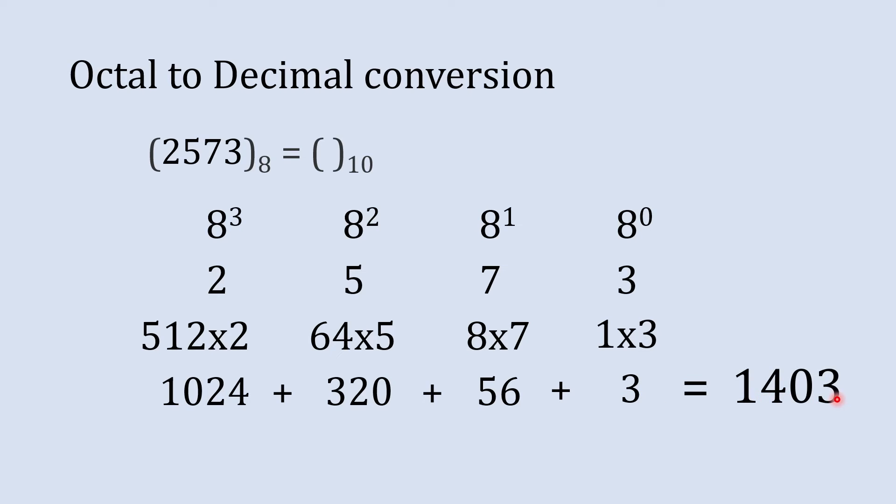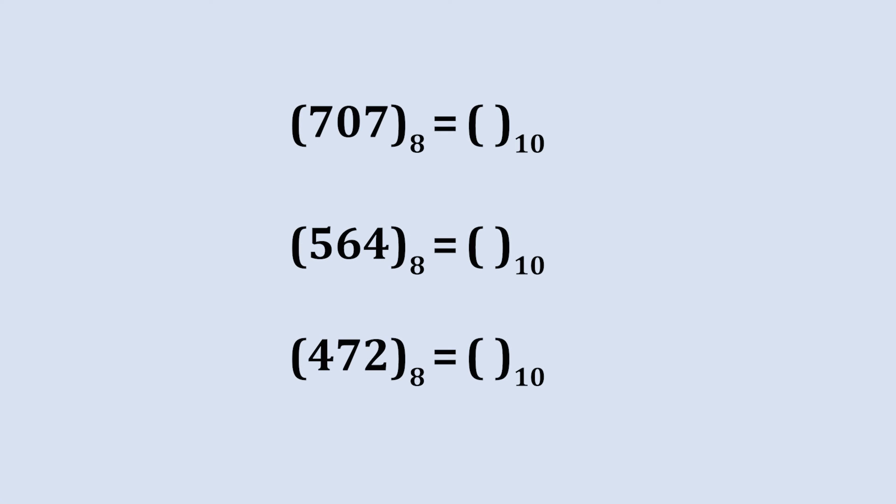So this 1403 is decimal equivalent to this octal number, and that's how you can convert octal to decimal. Here on your screen there are several octal numbers and you're supposed to convert it into decimal numbers.